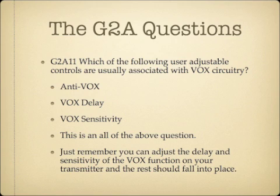Which of the following user-adjustable controls are usually associated with VOX circuitry? This is an all-of-the-above question. The answers are anti-VOX, VOX delay, and VOX sensitivity. You can adjust the delay and sensitivity of the VOX function on your transmitter. So anti-VOX, VOX delay, and VOX sensitivity are all controls usually associated with VOX circuitry.